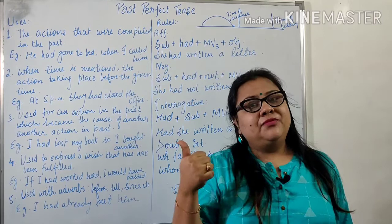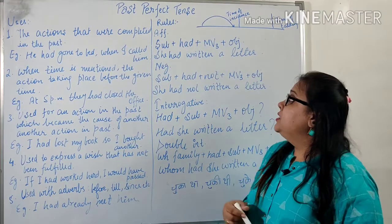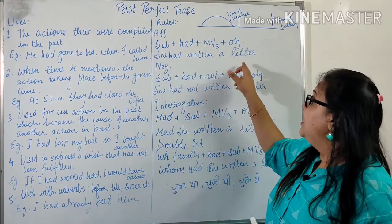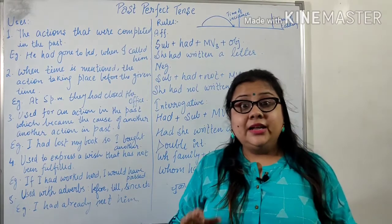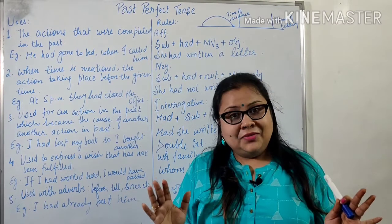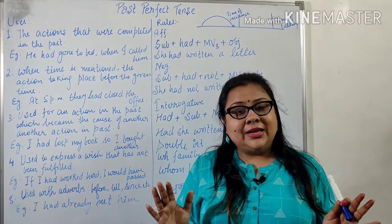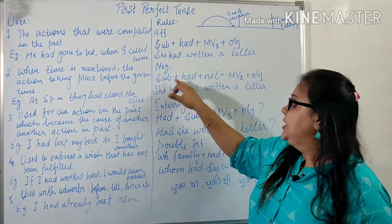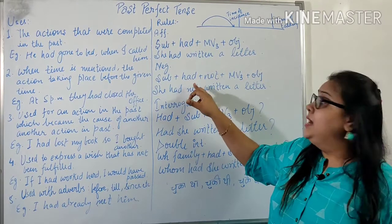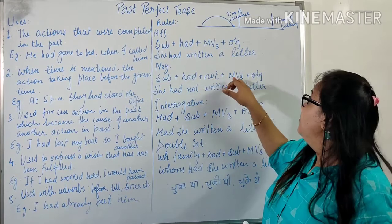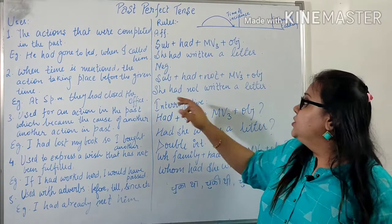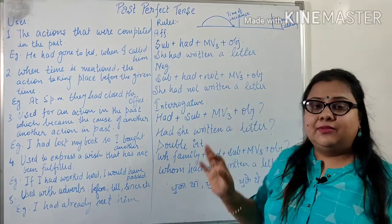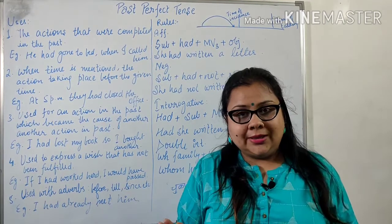For example: 'She had written a letter' — woh letter likh chuki thi. Talking about negative sentences: Subject + had + not + main verb third form + object. So: 'She had not written a letter' — woh letter nahi likh chuki thi.